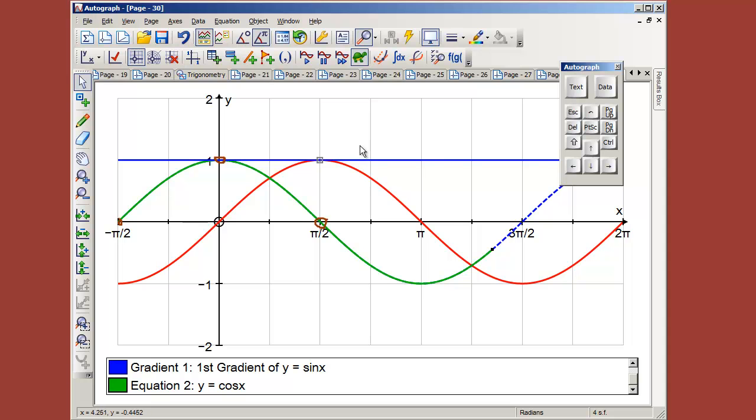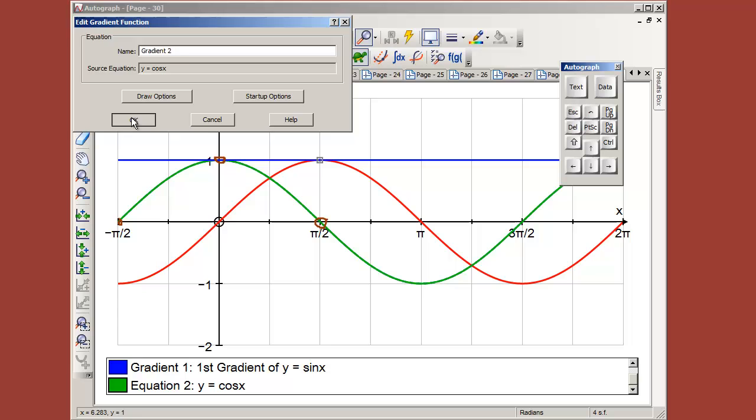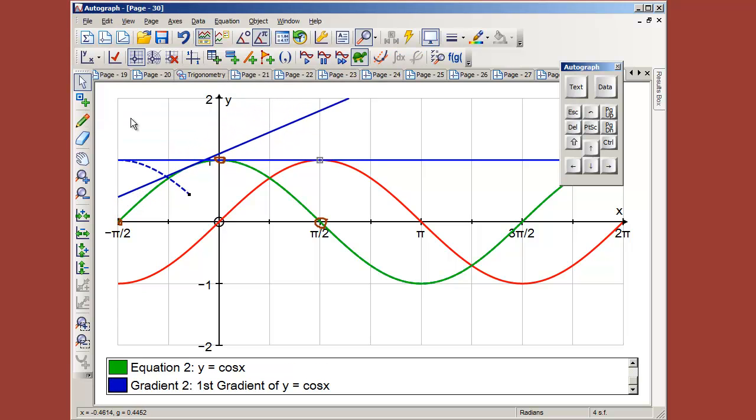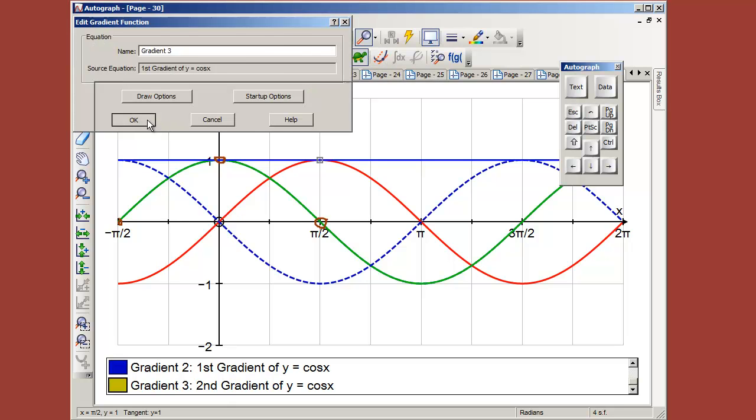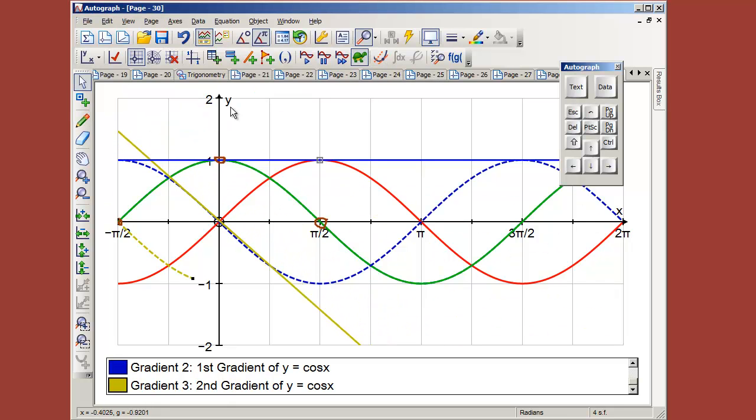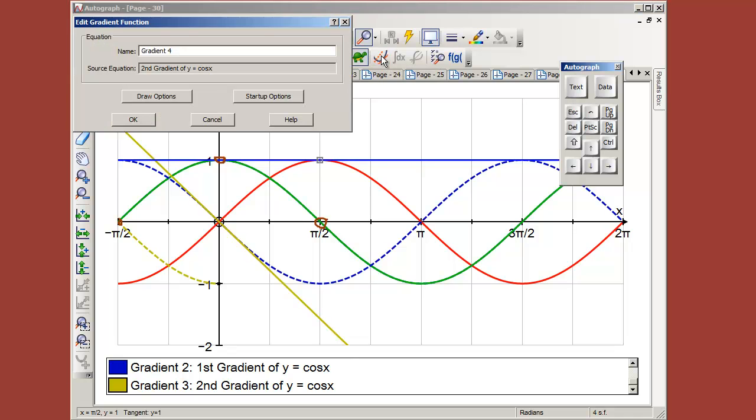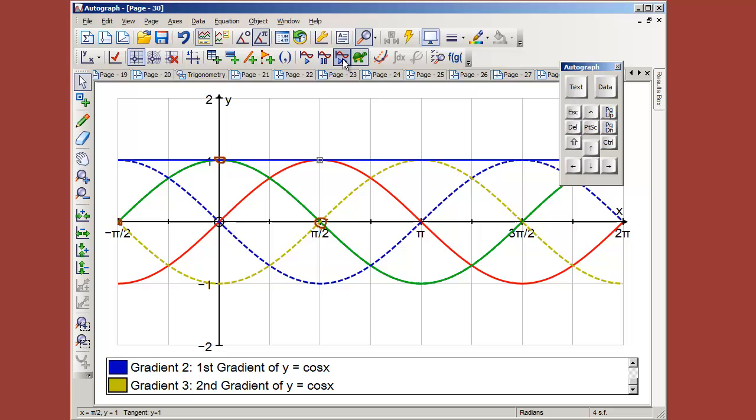This process goes on, of course. You can do the gradient of the gradient. And then you can do the gradient of that and so on. So these go around in a cycle. After a little experience, they realize that after you've done four, you're back to the start again. Now we're back to sine x.